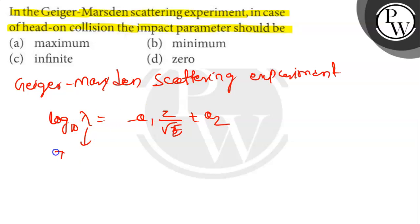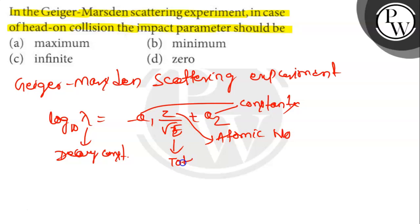Lambda is decay constant, and a1 and a2 are constants. Z is the atomic number, and e is the total kinetic energy.